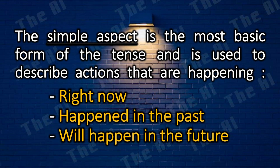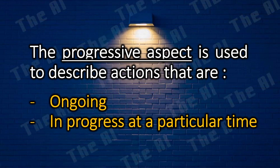The simple aspect is the most basic form of the tense and is used to describe actions that are happening right now, that happened in the past, or will happen in the future. The progressive aspect is used to describe actions that are ongoing or in progress at a particular time.